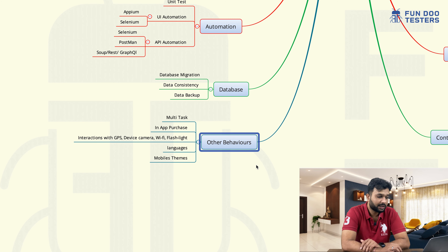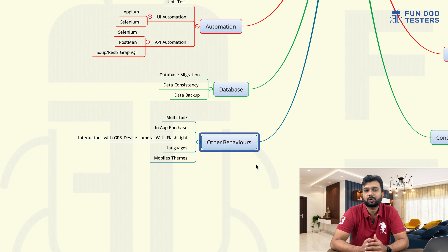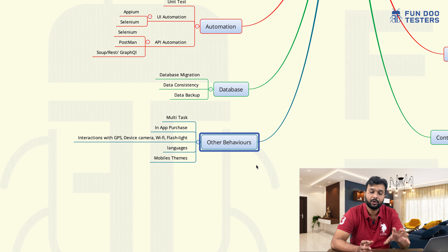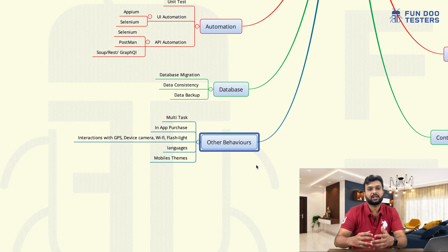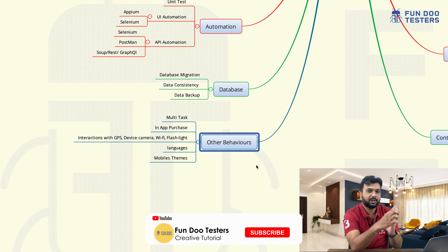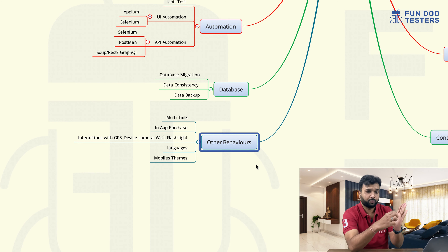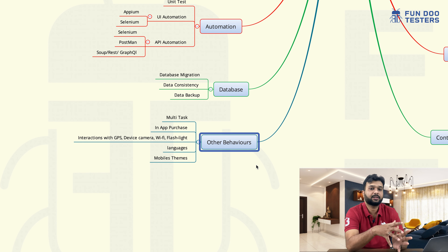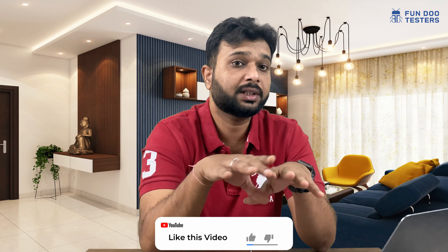Other behavior. In other behavior, we can say multitasking, in-app purchase, languages, and mobile themes. For example, in Android, there are multiple themes or launchers available using which we can change the theme. If I am changing the theme of the entire phone, will it impact my application or not? That area we need to take care of. Later on, multitasking — in some Android phones, it supports multitasking where one app can be used on the top half and another on the bottom. We have to make sure that if our application supports multitasking, it should work without any UI or critical issues. Sometimes in landscape mode the application works fine, but in portrait mode it may crash due to some issue or permission issue. We have to test the application 360 degrees.